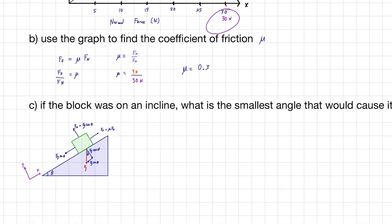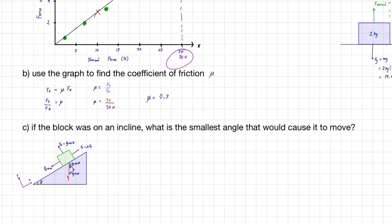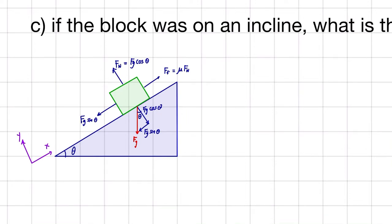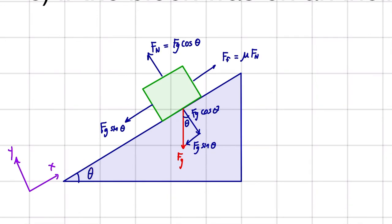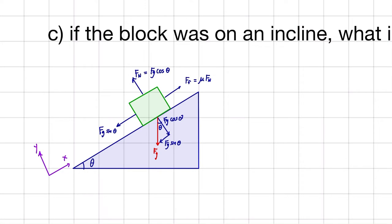So we have a block, and we want to know that if the block were on an incline, what is the smallest angle that would cause it to move? Something that's important to note here is that the mass of this block doesn't matter. It doesn't matter whether it's half a kilogram or a thousand kilograms. It's going to be the same angle. The mass does not matter.